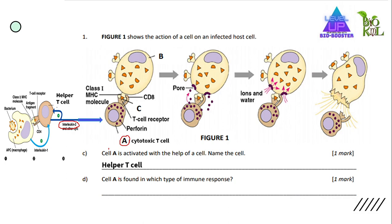Question D: Cell A is found in which type of immune response? The answer is cell-mediated immune response, because the cytotoxic T cell will attack the infected cell. So this is related to the cell-mediated immune response.